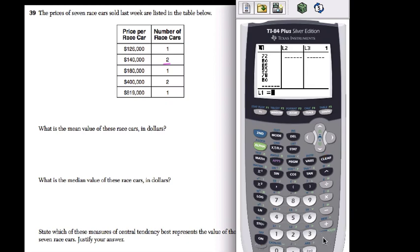So now I'm going to enter this data. I'm going to enter $126,000. That's my first one. Then I enter $140,000, and I'm going to do that twice. So it's $140,000, then $140,000.